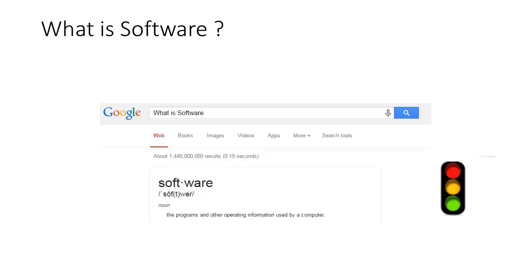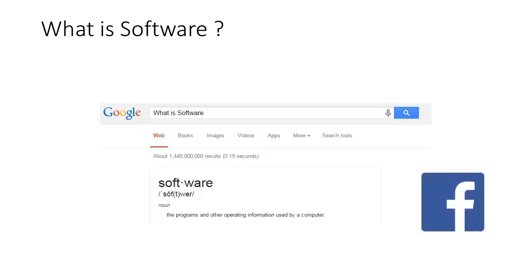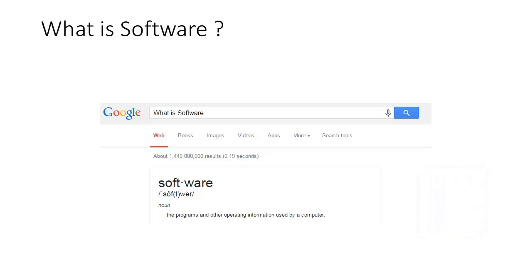An example of user-interaction software is Facebook — you enter your username and password to log in, you can add text or an image and make a post. So this software waits for your interaction. Of course, most software is just a mix of those types. That definition can be debated, but generally that's software.